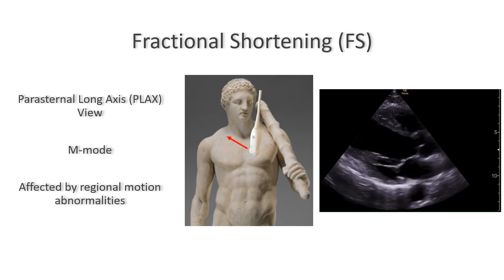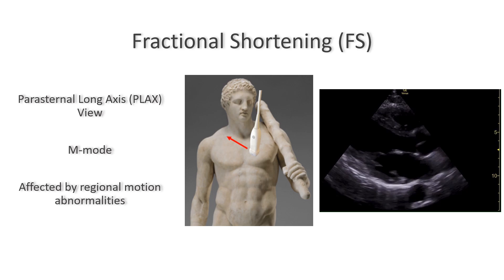The fractional shortening is measured at the parasternal long axis view. You can also use the parasternal short axis view to measure it, but in this presentation we'll just use the parasternal long axis view. You will also need M-mode on your echo, and if you have an anatomic M-mode as an option on your ultrasound that's even better, to eliminate error if you're cutting the ventricle at an angle.